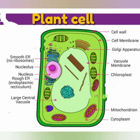The plant cell organelles include: vacuole membrane, chloroplast, mitochondria, cytoplasm, large central vacuole, nucleus, and endoplasmic reticulum. Here is the plant cell diagram with labeled parts, and the function of the cell organelles.